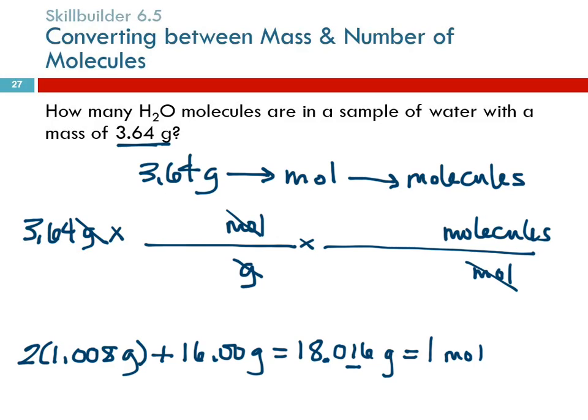So, one mole, 18.016. Sometimes students are tempted to round these molar masses to the nearest whole number. Don't do it. You don't want your molar masses to limit the precision of your answer. And you can get rounding errors. It's just not a good idea.